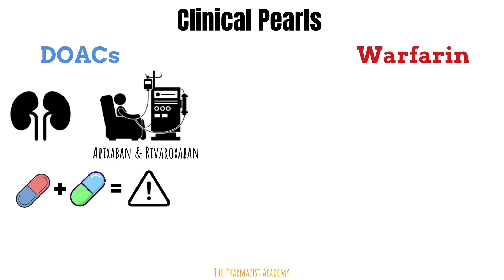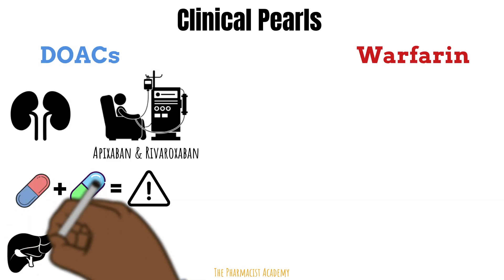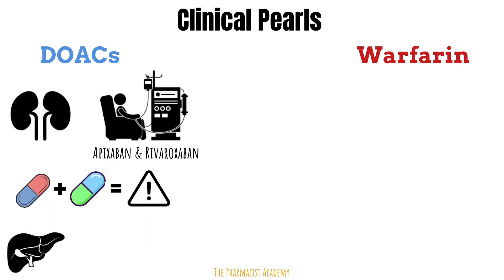Dabigatran does not go through the liver, so it has little to no interaction with CYP enzymes, but it's still significant for P-glycoprotein enzyme interactions. Because these agents are metabolized by the liver, caution should be exercised in patients with hepatic impairments.